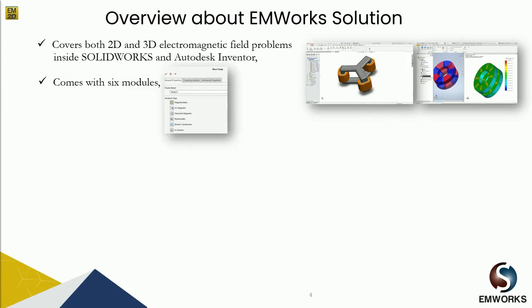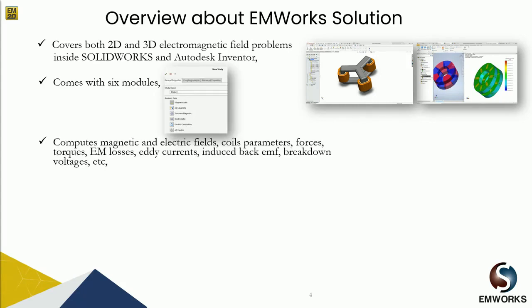Through several modules, our tools help compute magnetic and electric fields, coil parameters, capacitance, resistance, force and torque, electromagnetic losses, breakdown voltages, and many other quantities. Our simulation software comes with six modules: magnetostatic, AC magnetic, transient magnetics for magnetic field calculations, and electrostatic, electric conduction, and AC electric for electric field calculations.